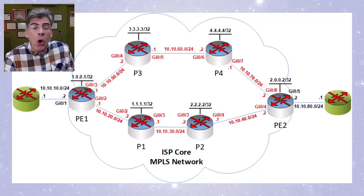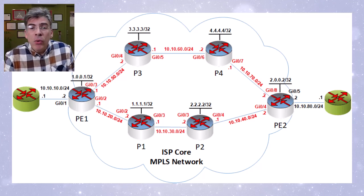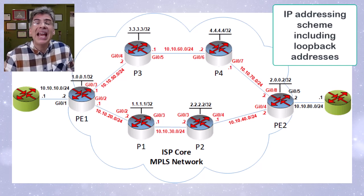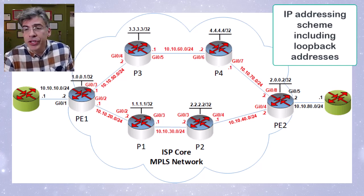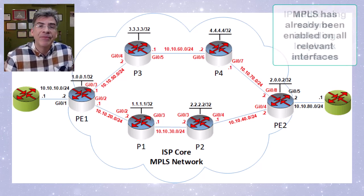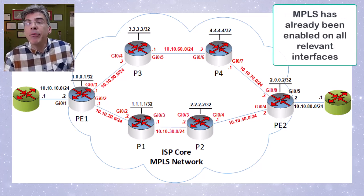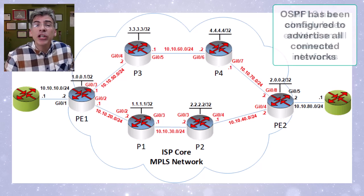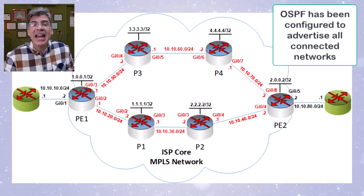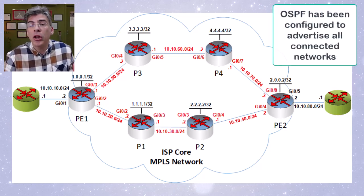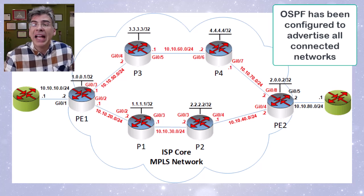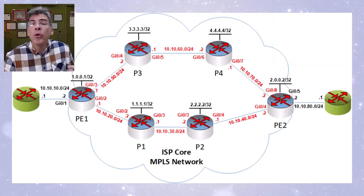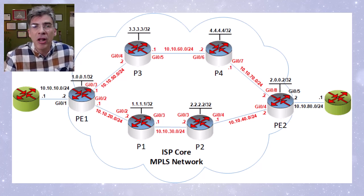Now, what has already been configured here? The IP addressing scheme and the loopback addresses of all of our P and PE routers have all been assigned. We have already enabled MPLS on all of the relevant interfaces, and we have configured regular OSPF and advertised all connected networks and loopback addresses so that all P and PE routers are aware of all of the routes on this topology.